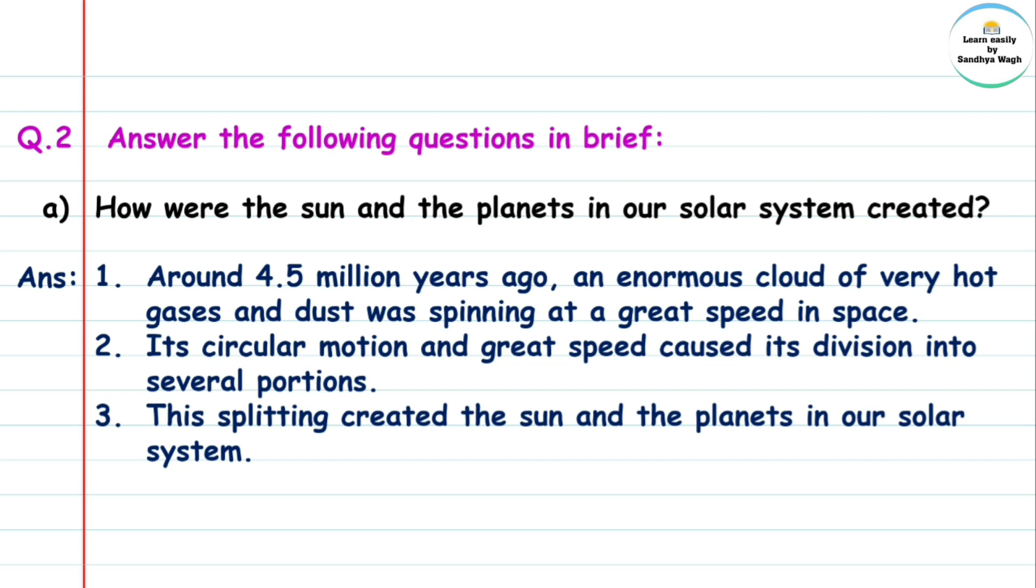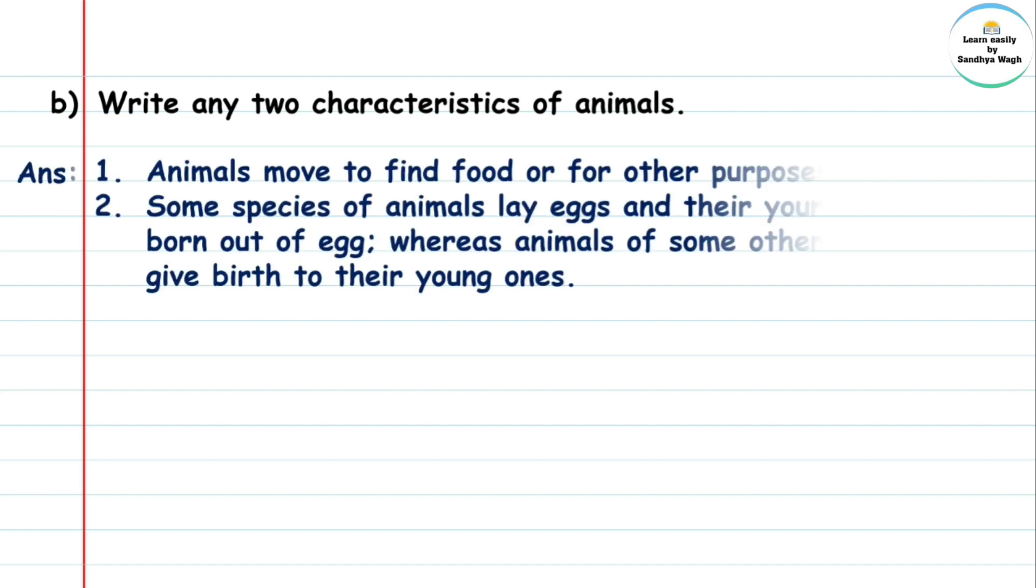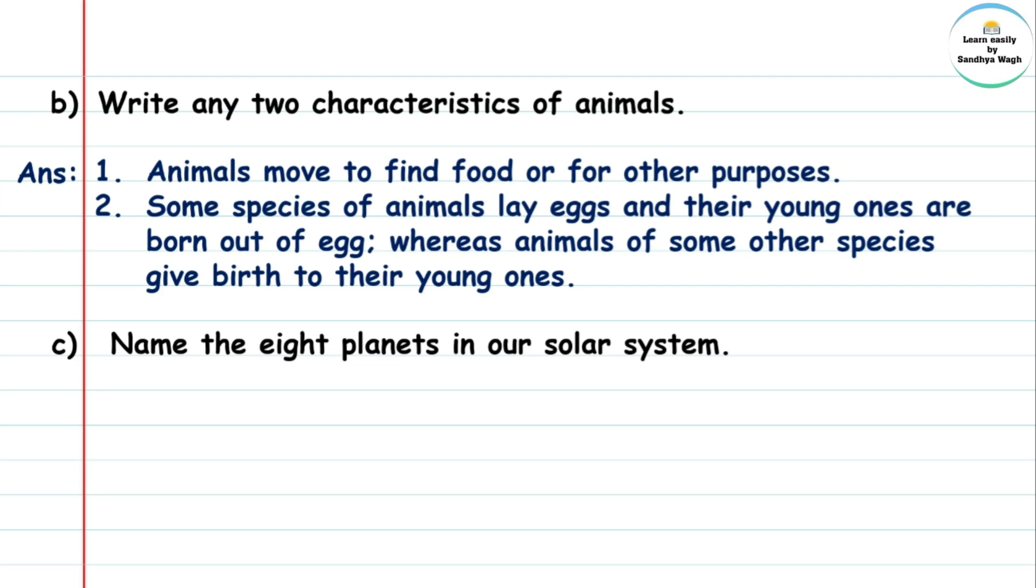This splitting created the sun and the planets in our solar system. Part b: Write any two characteristics of animals. Answer: Animals move to find food or for other purposes. Some species of animals lay eggs and their young ones are born out of eggs, whereas animals of some other species give birth to their young ones.